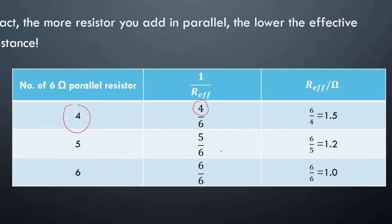Same thing, 5 resistors gives 1.2 ohms, 6 gives 1 ohm. So in fact, it gets smaller and smaller as you add more and more resistance.